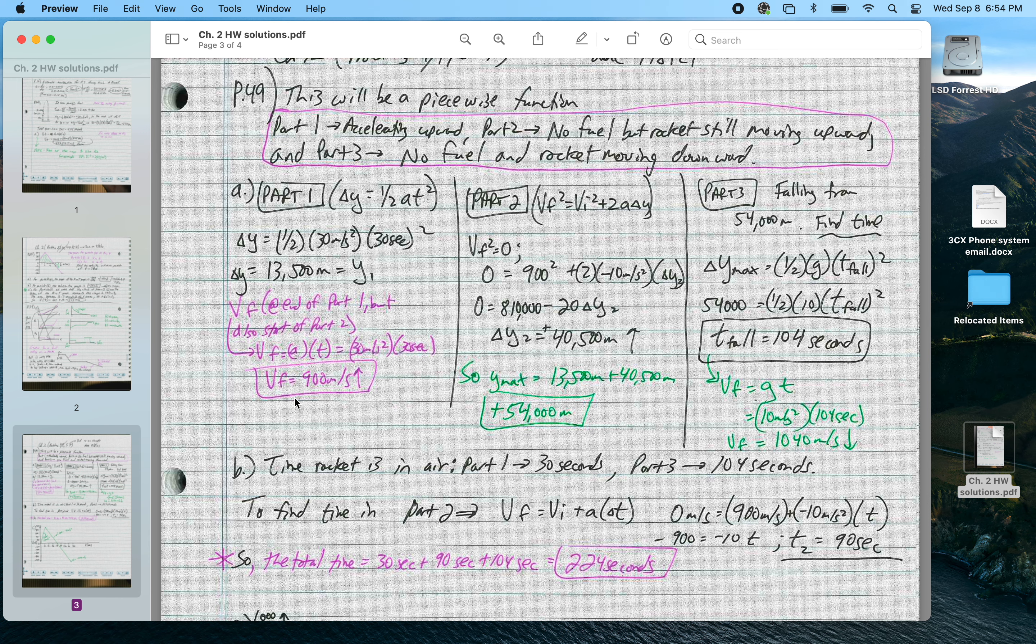I also want to know the velocity at the end of that first interval, and that's a times t, 900 meters per second up. I want to know that because that final velocity for region 1 is going to be the initial velocity for region 2. And when I do that, I plug it into the equation of vf squared equals vi squared, or actually v0 squared I guess, plus 2a delta y.